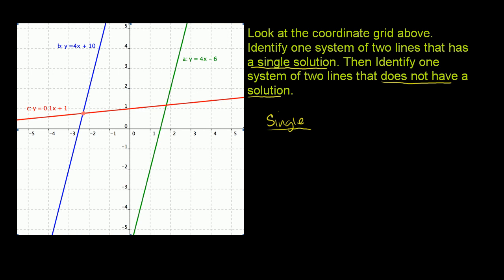So one system that has one solution is a system with y is equal to 0.1x plus 1, and then this blue line right here, which is y is equal to 4x plus 10. Now they only want us to identify one system of two lines that has a single solution — we've already done that.